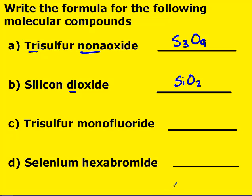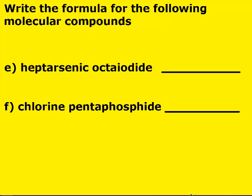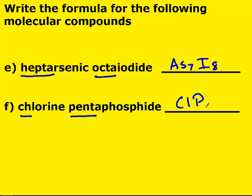Go ahead and do the next two on your own, then restart when you have those answers. Three sulfur monofluoride: one fluorine — no prefix — so just one fluorine, giving S₃F. Then hexabromine: hexa is six, so Br₆. Hepta is seven, so arsenic heptaiodide gives AsI₇. Octa is eight. No prefix means just one chlorine, and penta is five with phosphorus giving PCl₅.